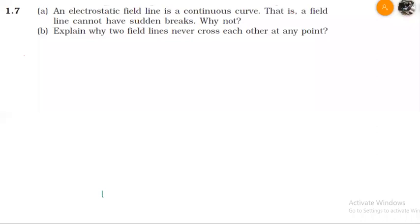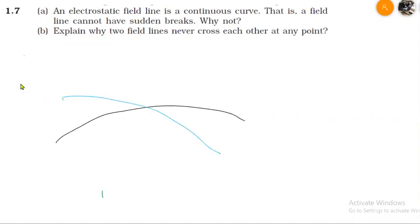Question B: explain why two field lines never cross each other. Let us assume that two field lines cross each other — one field line goes this way, another goes this way, and they intersect each other at a point.